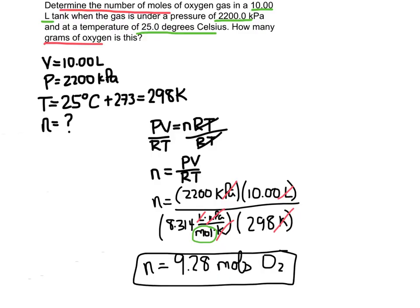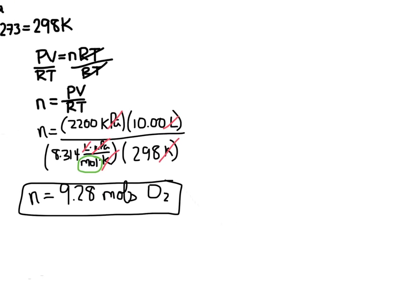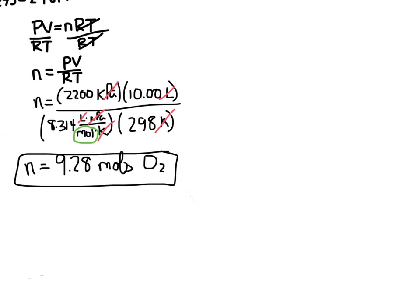The second thing we want is to convert this into grams of oxygen gas. Usually questions are going to want grams rather than moles because we kind of understand grams a little bit better. So to convert this into grams, we're going to need to take this number and multiply it by the molar mass of oxygen gas.